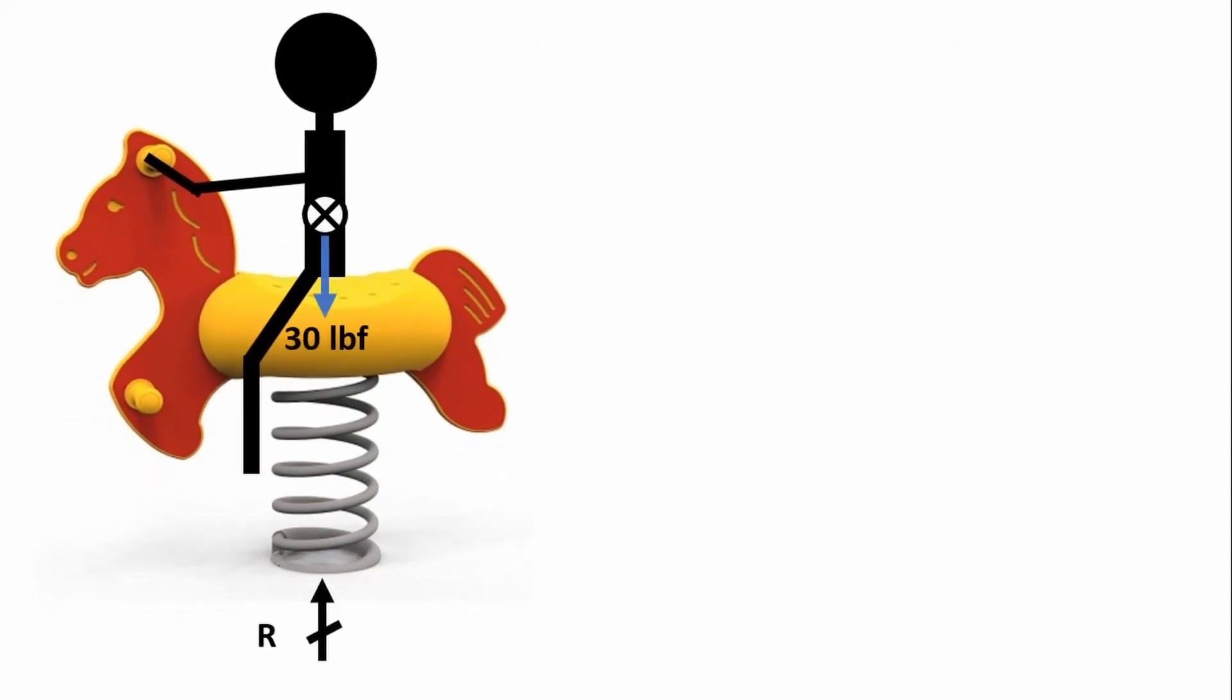So the first step you want to do when you do a combined torsion and shear example is, like anything else, determine your reaction forces. Draw a free body diagram. In this case, we have a kid on this rocker, say it weighs 30 pounds, and we have a reaction force at the base in the Y direction. You want to determine your reaction forces using the equations of equilibrium.